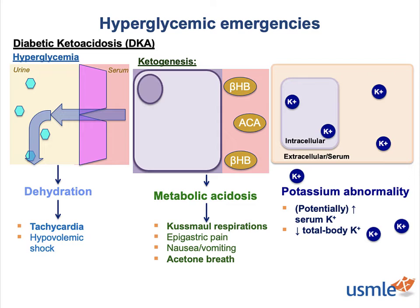One pretty unique complication of DKA is mucormycosis — a face-eating fungus whose favorite food happens to be ketones and sugar, and whose favorite environment is slightly acidic. This is a big deal not just cosmetically, but because it spreads surprisingly fast and is more than capable of penetrating into the brain. Be thinking of acute invasive fungal sinusitis if your patient with DKA develops facial symptoms like orbital swelling or any of the cranial neuropathies. This is an emergency and requires surgical debridement.